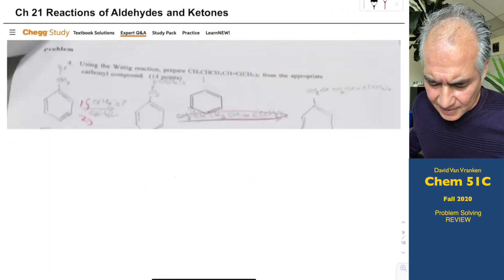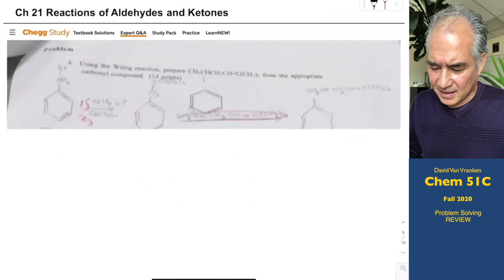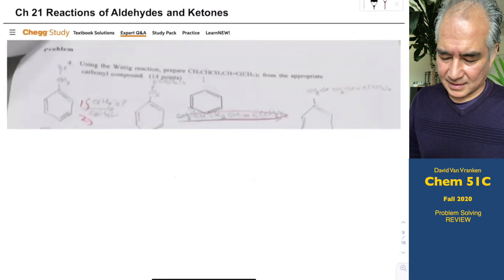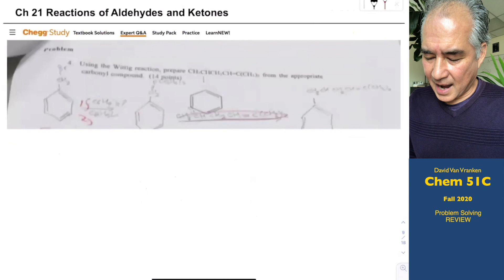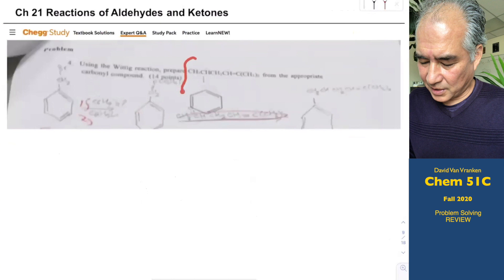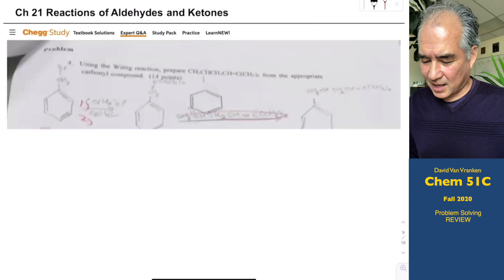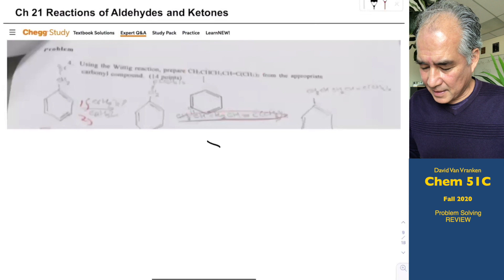Somebody on Chegg posted an answer for an exam. It looks like: using the Wittig reaction, prepare this compound. There's a big complex molecule here. How do you prepare it? They don't tell you the starting material; they just say you have to use a Wittig reaction somewhere in the synthesis.